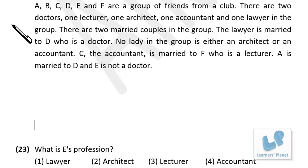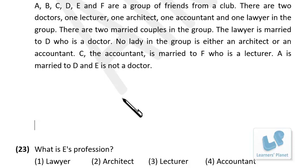Let's try this question. A, B, C, D, E, and F are a group of friends from a club. There are two doctors, one lecturer, one architect, one accountant, and one lawyer in the group. There are two married couples in the group. The lawyer is married to D, who is a doctor.